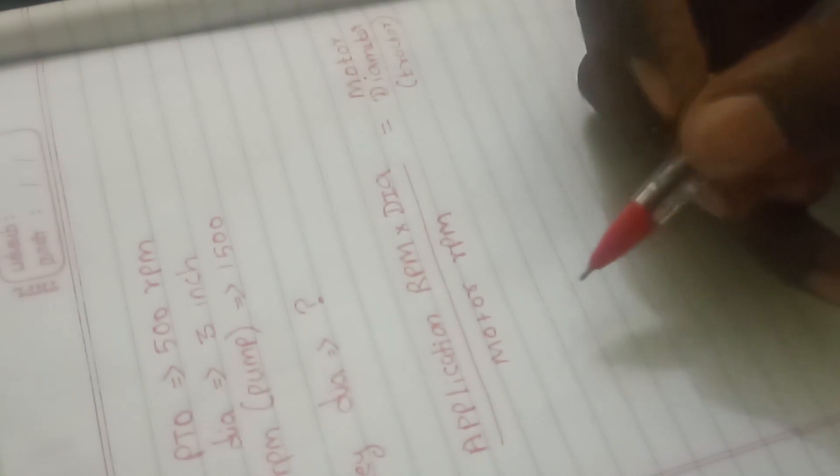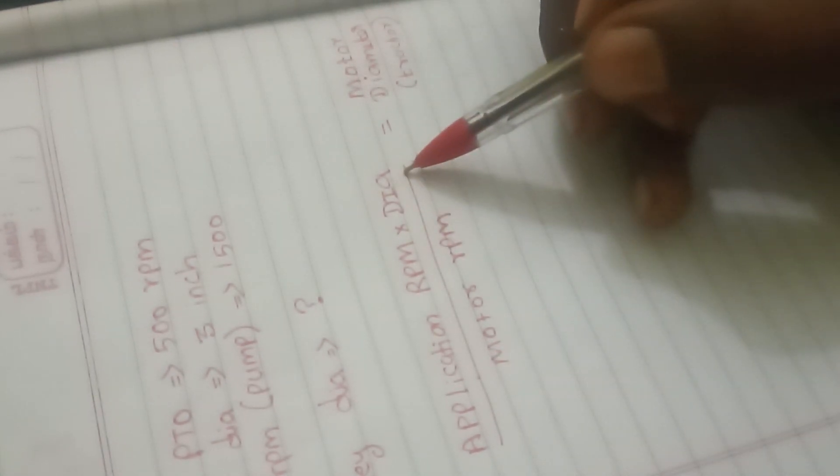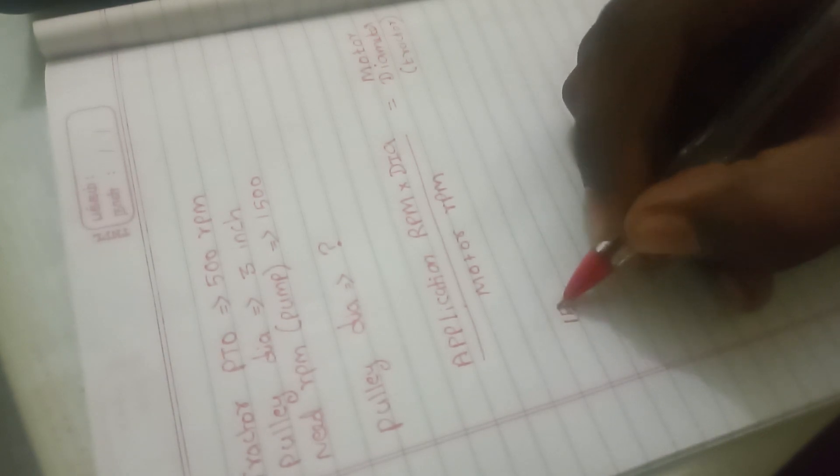Let's look at the formula. The diameter of the motor is 500 RPM. The diameter of the pump is 500 RPM, so the diameter of the pump is 3 inches. Now let's look at the unit conversion — you can take 3 inches. If you want to use mm or cm, you can use mm or cm. The motor RPM and the PTO shaft is 500.